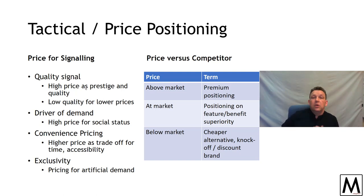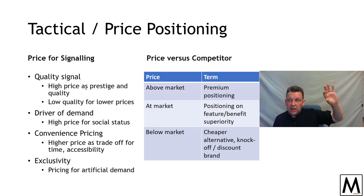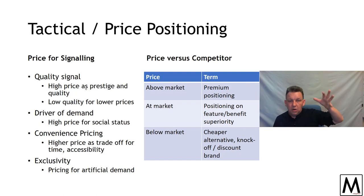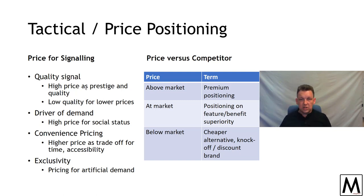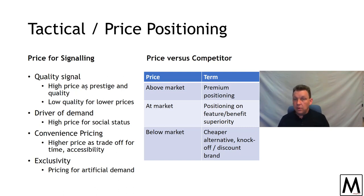At above-market positioning — premium pricing — for every product there is a space for a more expensive version: high-fashion, elite, luxury, prestige, exclusive. And there's always a position below it — the knockoff, the also-ran. There's always a chance to go higher or lower. The reference brand sitting in the middle provides a point of contrast you can use in your positioning strategy: 'We're just like Qantas, only cheaper' — Jetstar. 'We're not like Qantas but only cheaper' — Virgin Blue. 'We're like Virgin Blue but more expensive because we're better' — Qantas. Everyone has a positioning strategy based on their pricing.